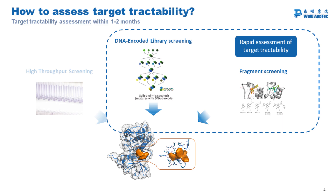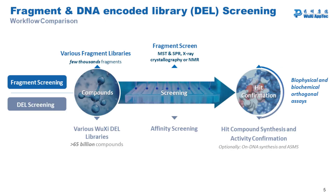In contrast to classical HTS, which is quite time-consuming and resource intensive, the development of DNA-encoded libraries and advanced fragment screening approaches offer many advantages. The most important advantage is fast target tractability assessment within one to two months. Both methods detect binding events, and neither of them usually produce functional information.